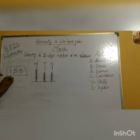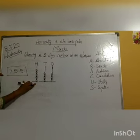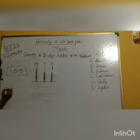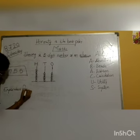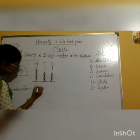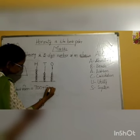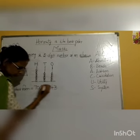So in this way we can draw beads on an abacus. Again, the expanded form: 700 plus 50 plus 5.